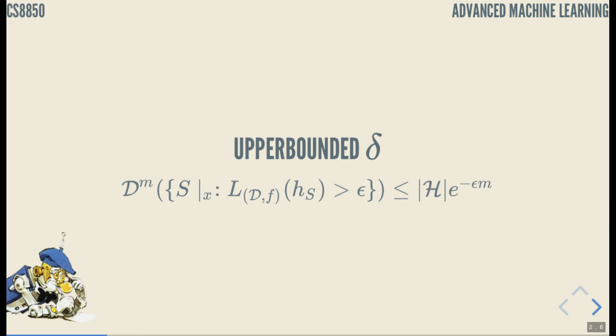Also, at the end of our last lecture, we upper bounded delta. So delta is probability of getting a non-representative sample, and now we know from last lecture that it is upper bounded by the size of our hypothesis set and a scaling factor that includes sample size and our accuracy parameter.